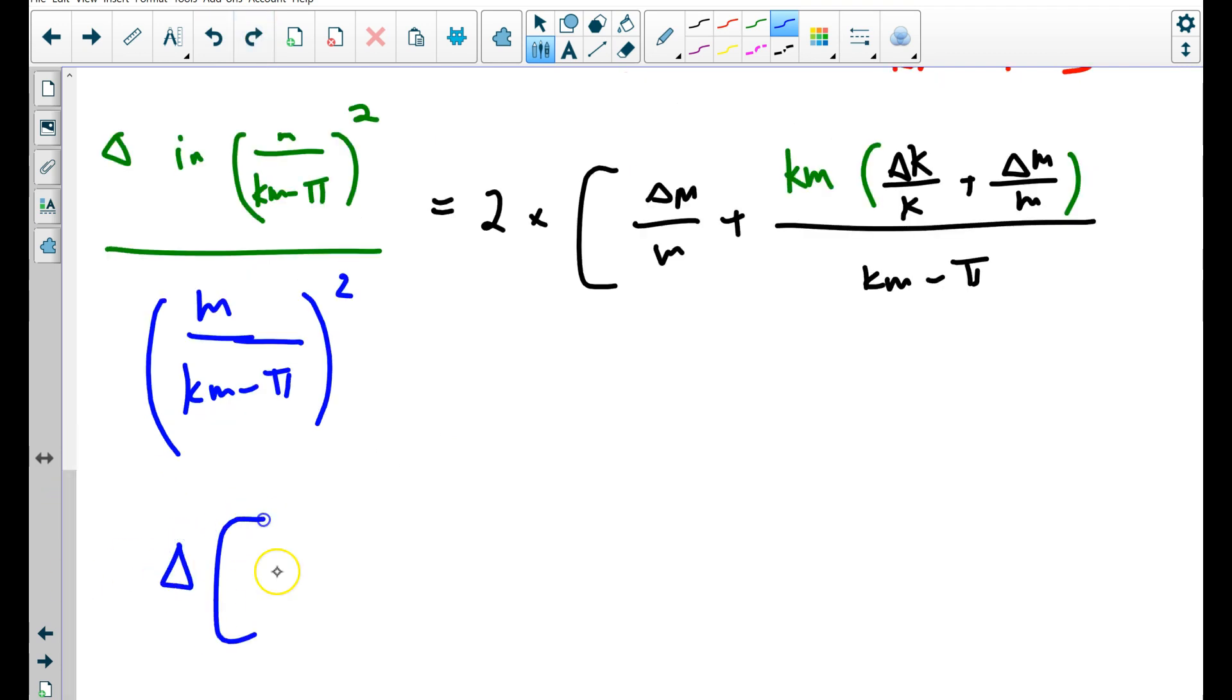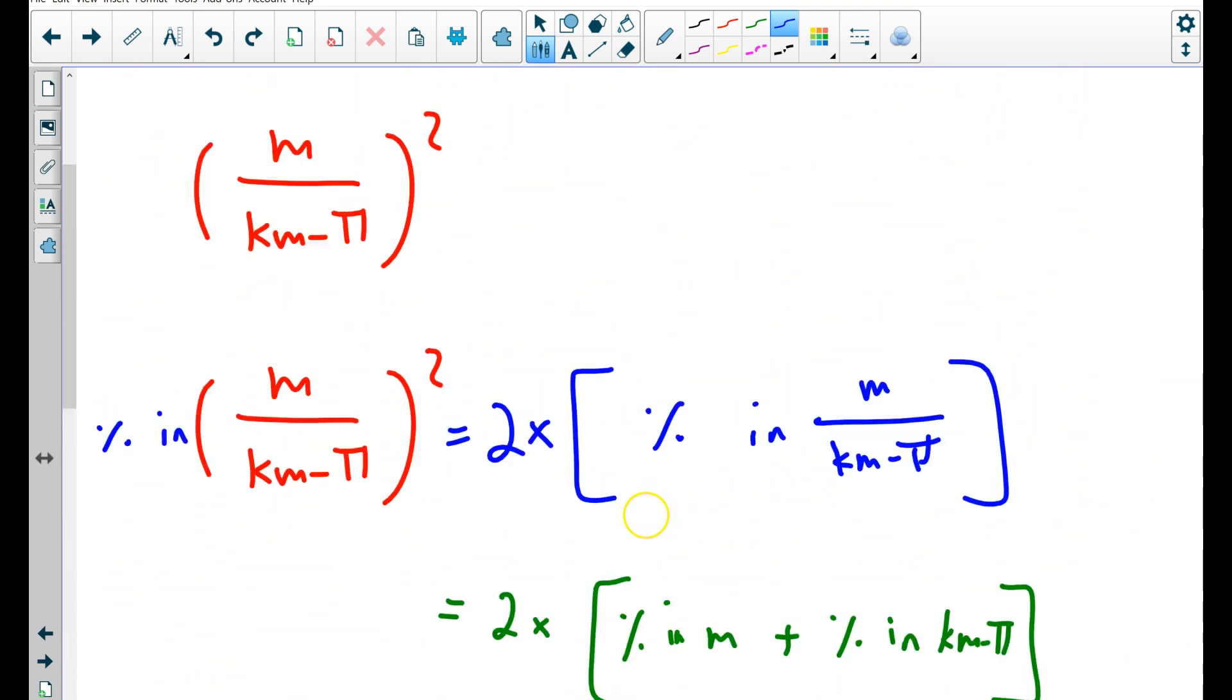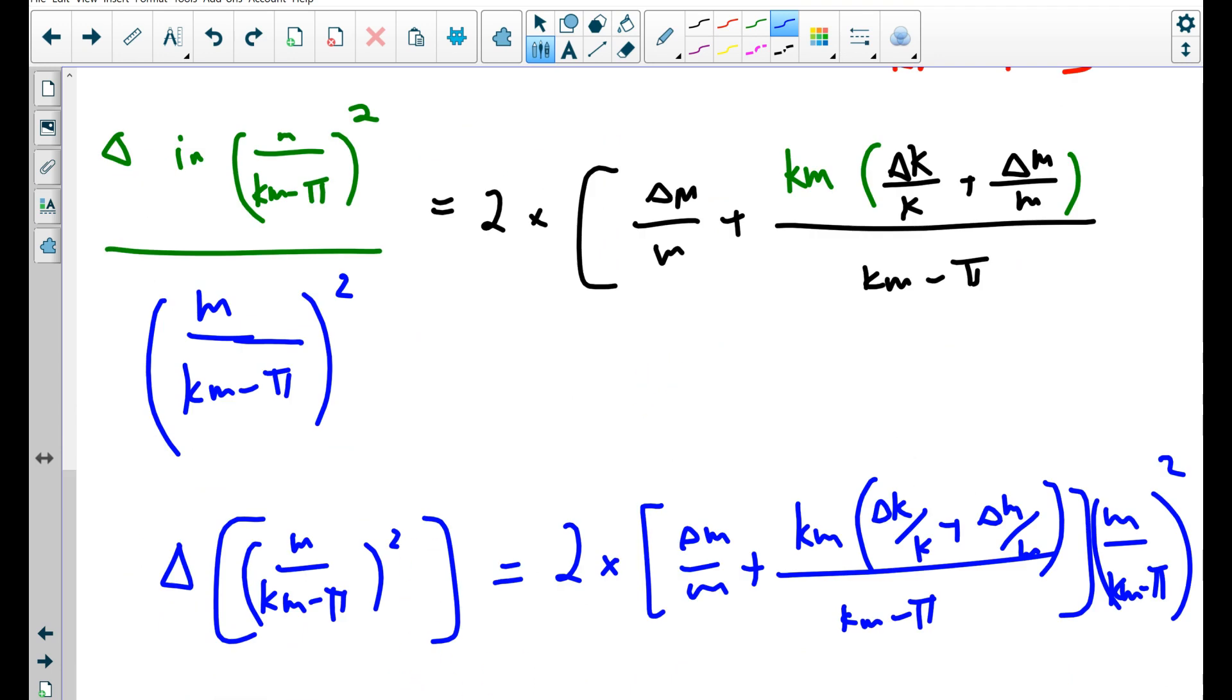So if I'm looking for the absolute uncertainty, and I am, because that's what we put on the x-axis as the error bars, the absolute uncertainty. I have to cross multiply by the denominator. And so this gives me my final answer. The absolute uncertainty in mass over km minus pi is two times this whole thing, m over km minus pi multiplied by the value m over km minus pi squared. Now, that is a mess and deriving it and then executing it with no errors is really, really hard. I mean, how much space in my IA will it take just to explain all of this mess?